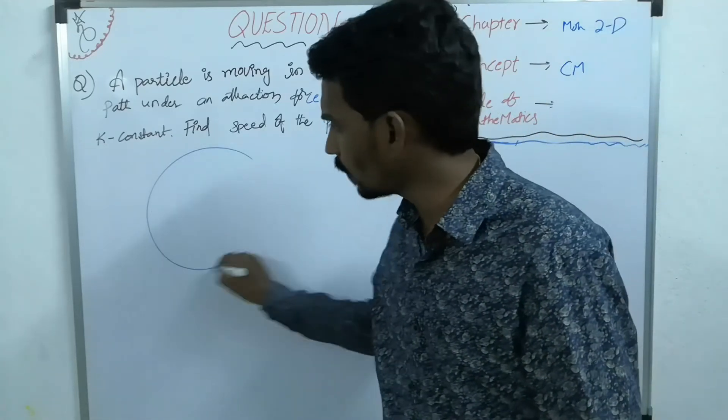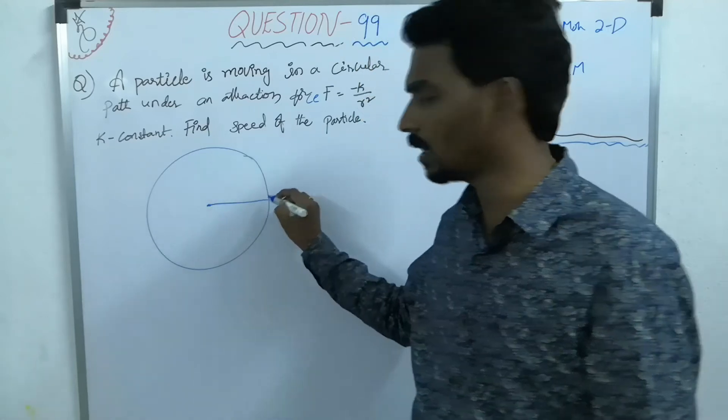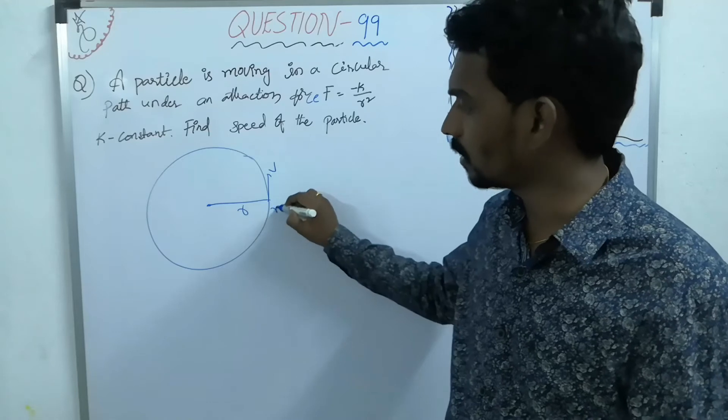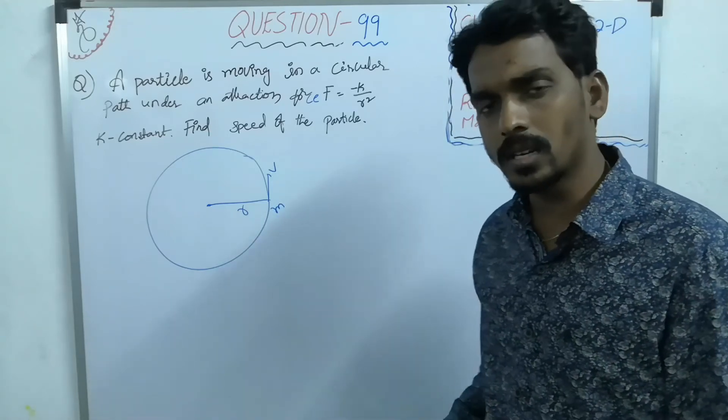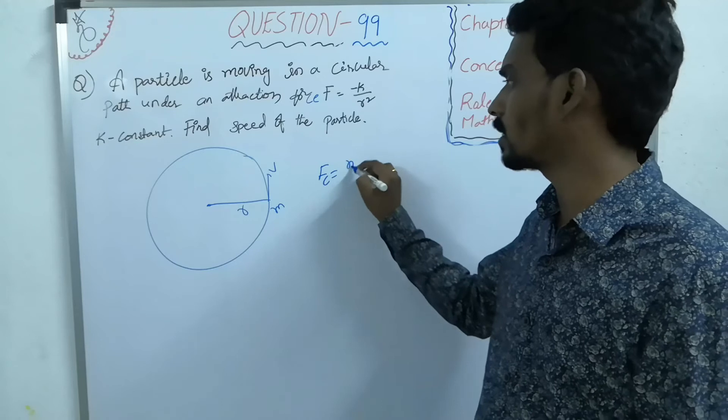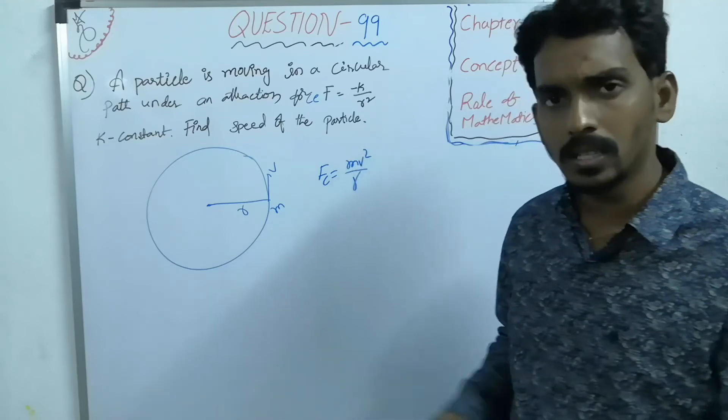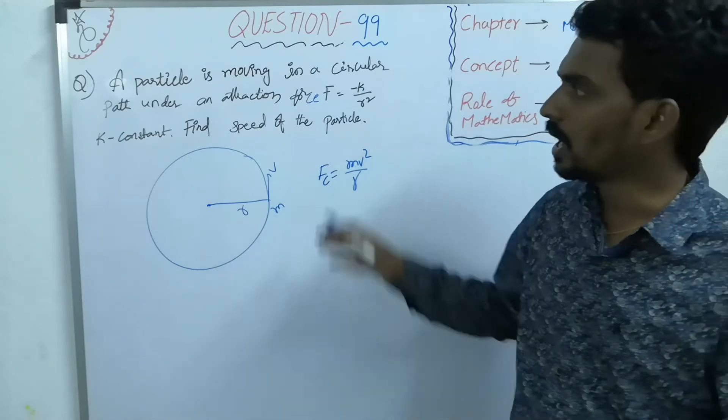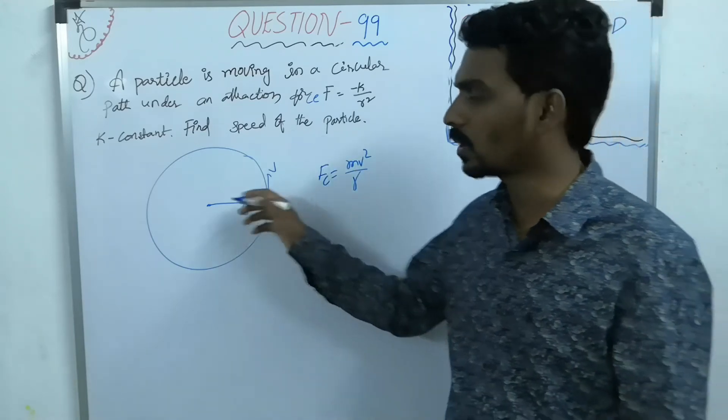For every particle in circular motion, at any instant, there is always one necessary force required - centripetal force, that is mv square by r, that must be provided from an external force acting on the particle towards center.